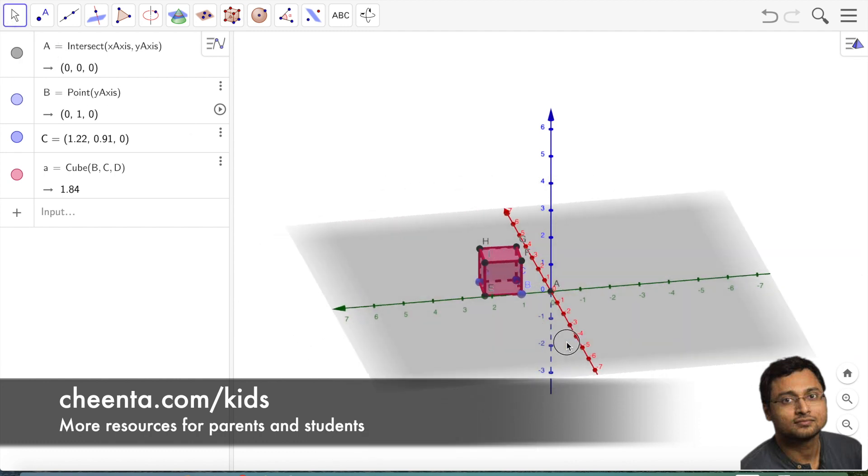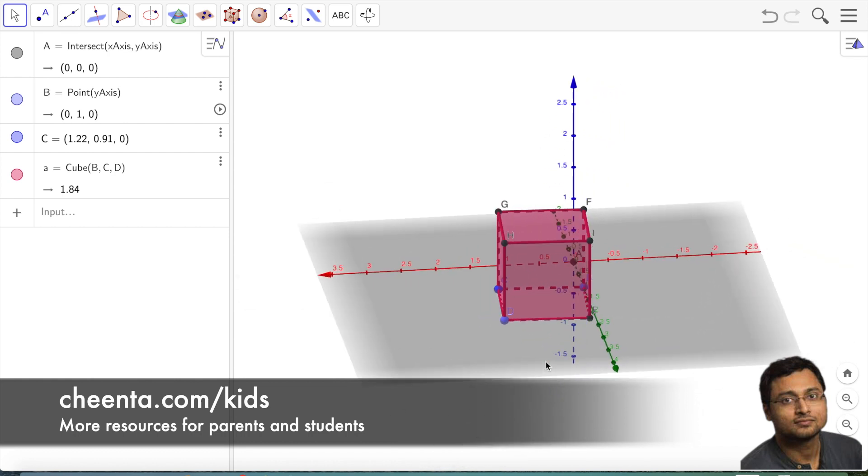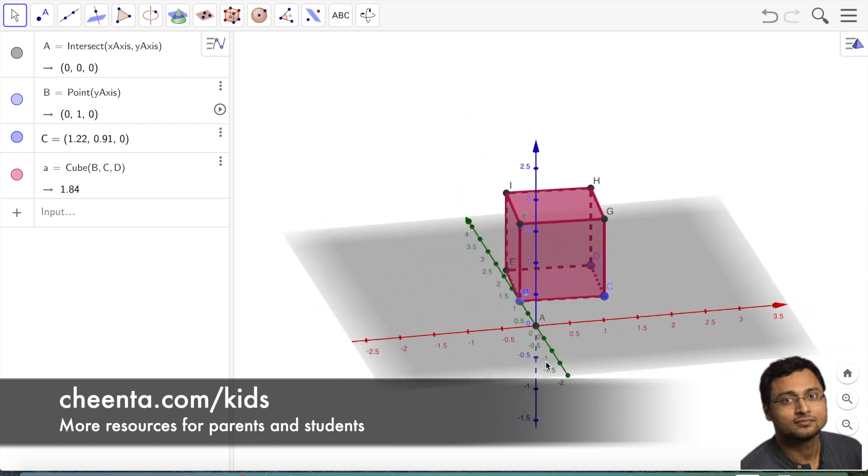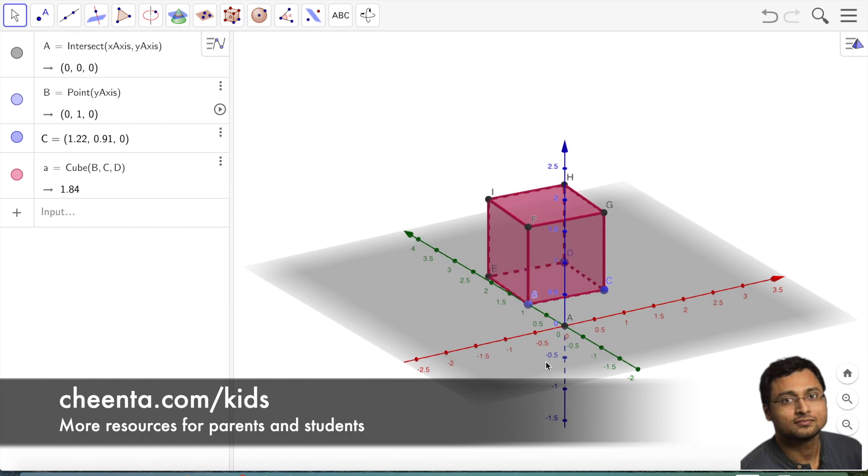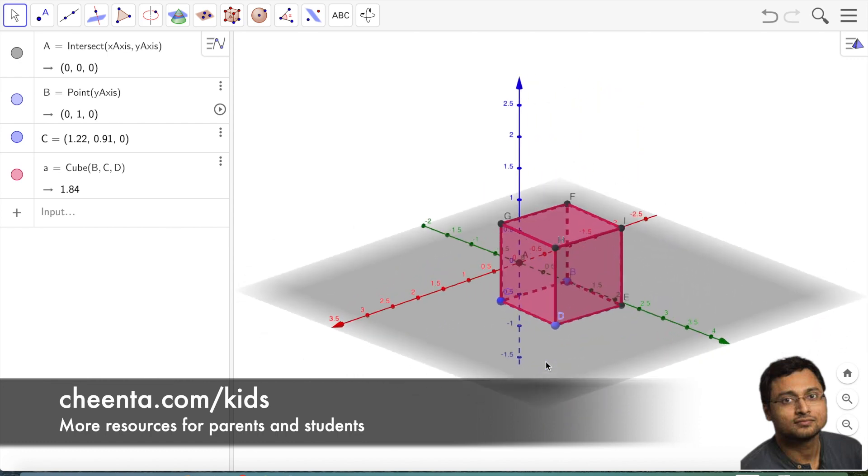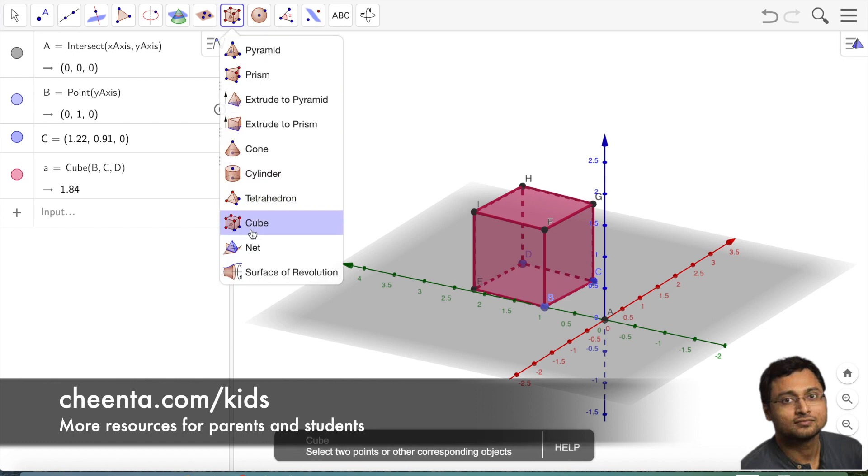It's a simple but beautiful structure. Now, we will be drawing the net of the cube just as we did in the piece of paper. But this time, we will be doing it using technology, that is GeoGebra. So we will click on net.